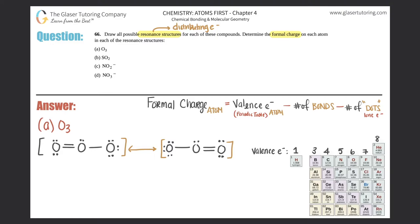Now we need to find the formal charge for each atom. Formal charge comes from two things: knowing how to draw Lewis structures, and applying the formal charge formula. The formula is: valence electrons of that atom, minus the number of bonds it has, minus the number of lone electrons (dots). It applies to one atom at a time, not the entire molecule.